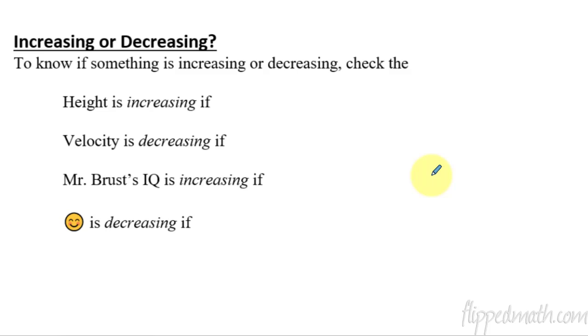To know if something is increasing or decreasing—these are very key words you're gonna see over and over again—all we do is check the sign of the derivative. If we know the sign of the derivative, then we know if it's increasing or decreasing. Now the keyword here is "it's," and "it's" is just whatever the something is. For example, is height increasing? Well, if I want to know if height is increasing, then I check height's derivative. If height's derivative is positive, then it's increasing.